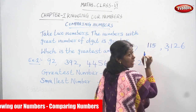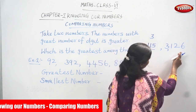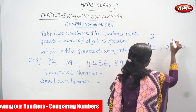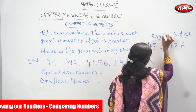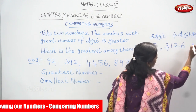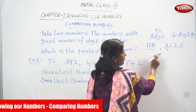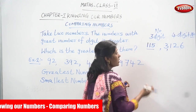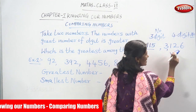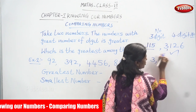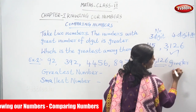Look at the digits. First, you have to count the digits. Ones, tens, hundreds — so 115 has three digits. Look at the next number: ones, tens, hundreds, thousands — that is four digits. This is a four-digit number and that is a three-digit number. So, 3126 is the greatest number compared to 115.